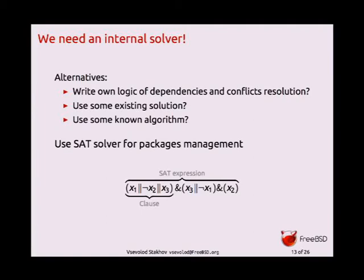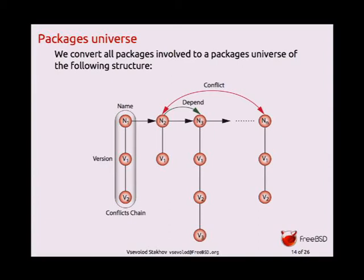How is the SAT problem linked to packages? We can convert all our package relationships to a SAT expression. First, we create a so-called package universe — we have packages with different names and different versions, and all versions of the same name are considered conflicting, which is needed for upgrade purposes. You can have different versions with the same name, and you need them to be non-conflicting, with some way to find upgrades — so version 2 is an upgrade for version 1, but they conflict. Then you set other relationships between packages: dependency relationships, conflict relationships, and so on.